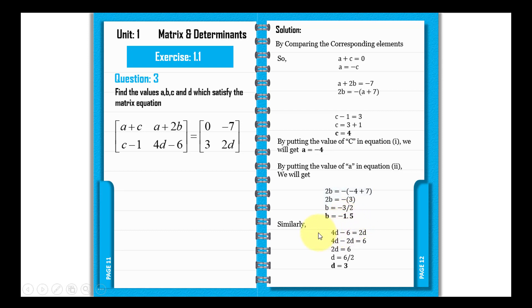Similarly, for the last element, 4d minus 6 equals 2d. So we will solve this.